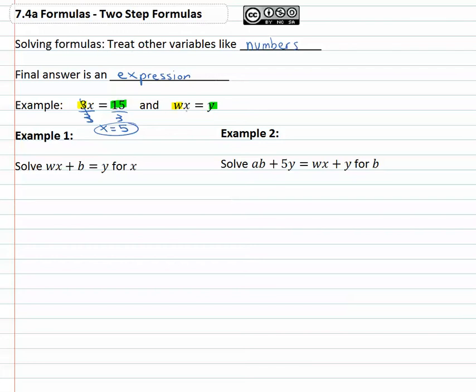We want to get x alone, so we divide out what it's multiplied by. We'll divide by the w, and we get x is equal to this fraction, the expression y over w. So now our answers are expressions instead of numbers, but the pattern we use to solve is the same pattern with numbers.